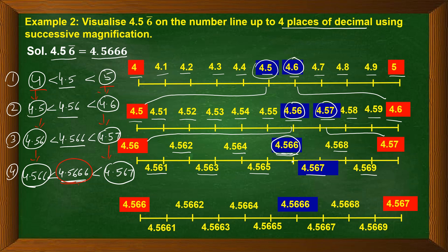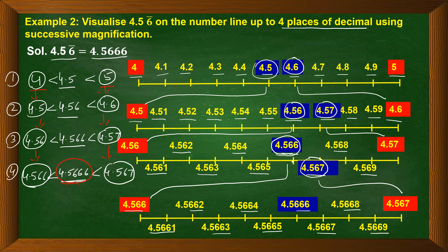Next, 4.5666 lies between 4.566 and 4.567, so these become the endpoints of the next number line. In between we have 4.5661, 4.5662, 4.5663, 4.5664, 4.5665, 4.5666, 4.5667, 4.5668, 4.5669 — and we mark 4.5666. This is our point on the number line. This process is known as successive magnification.